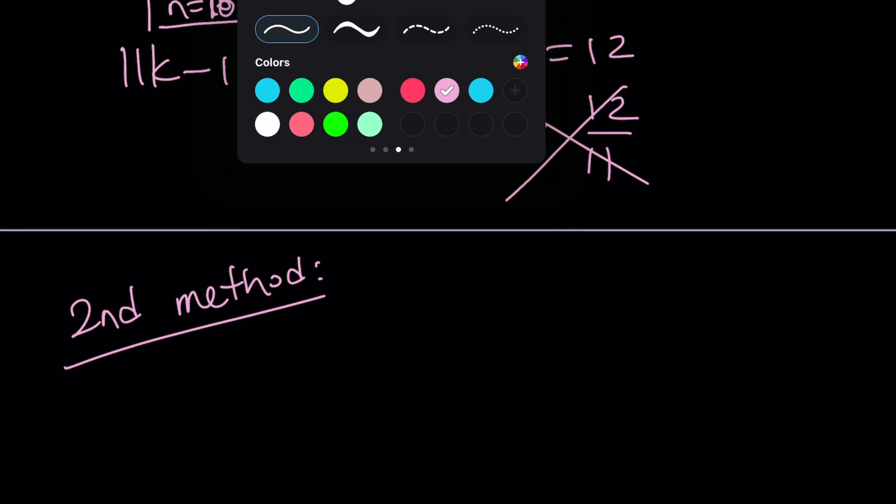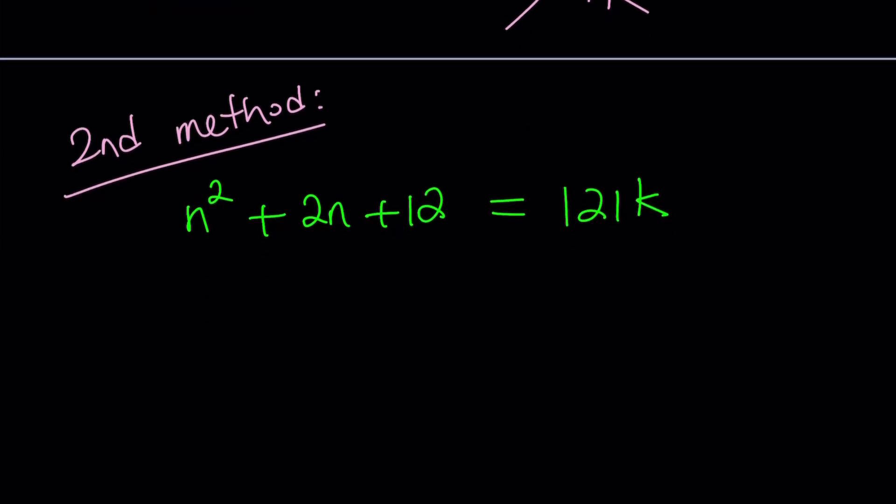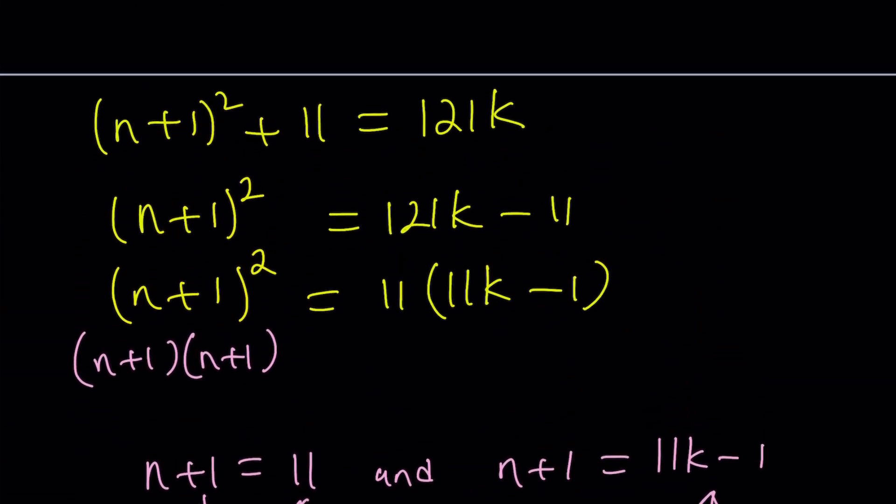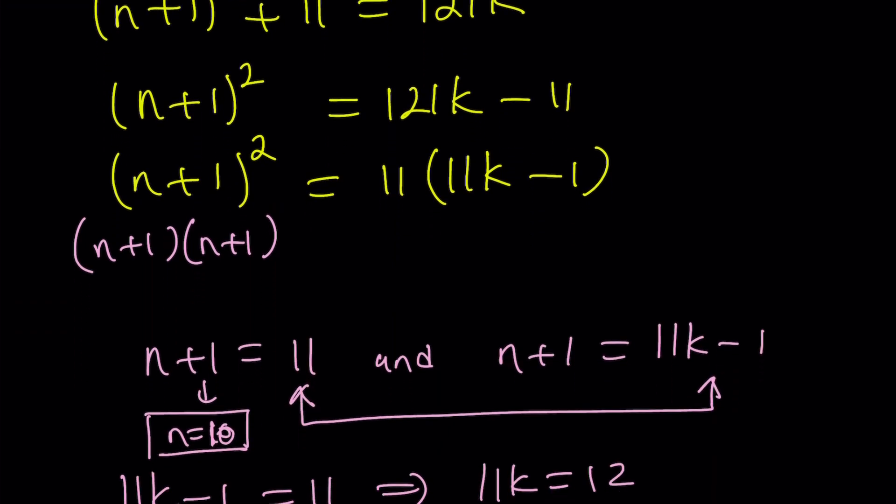So for my second method I'm going to do the following. I'm going to rewrite the original problem. And again I haven't given you the actual statement which I'm going to tell you at the end. Now first method basically depended upon completing the square and factoring the expression, setting it equal to a perfect square.